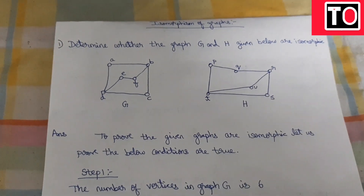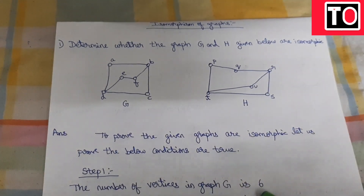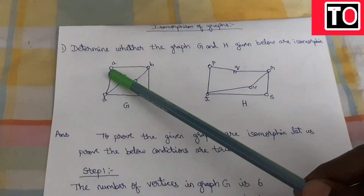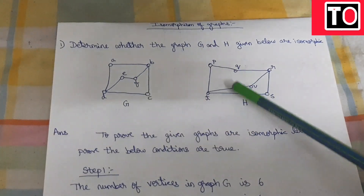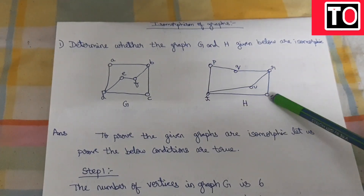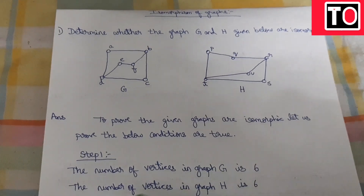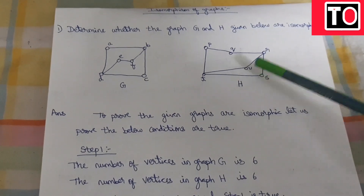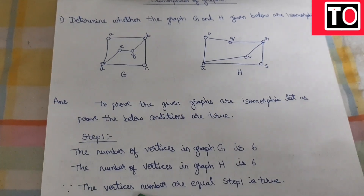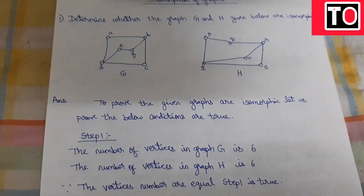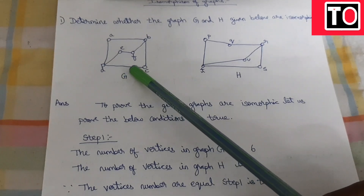The first step is the number of vertices must be equal in both graphs. The first graph is G, and the number of vertices in graph G is 6. Step 1 is true.